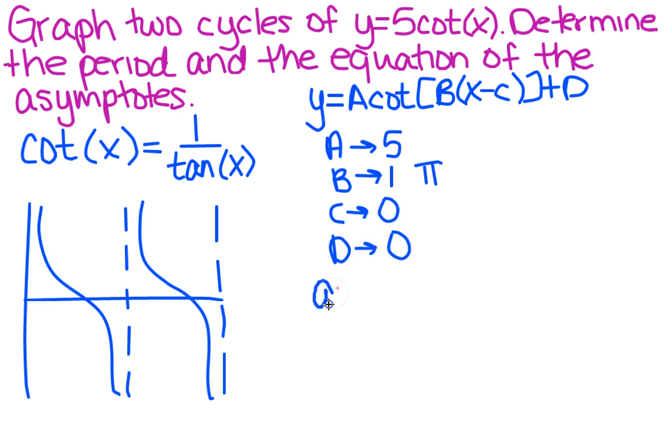So what about our asymptotes? We need to find those. There is a formula for that that tells you how to find them, and that's x equals k times pi.